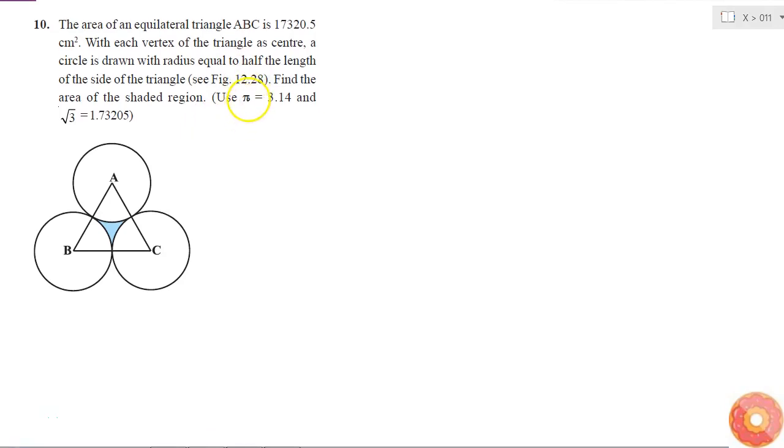Area of the equilateral triangle ABC is 17,320.5 cm². With each vertex of a triangle as the center, a circle is drawn with radius equal to half the length of the side of the triangle. Find the area of the shaded region.